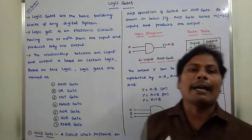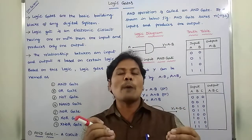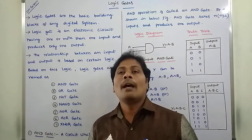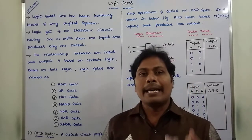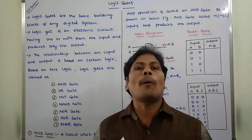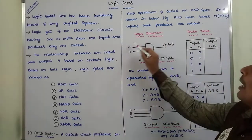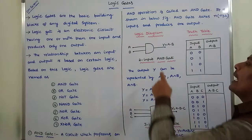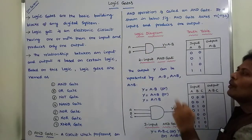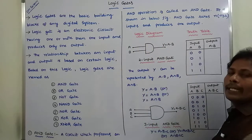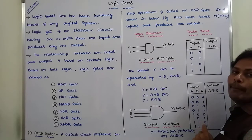The first one is the AND gate. A circuit, or a logic circuit, which performs the AND operation — that is, a logical AND operation — is called an AND gate. This is the simple diagram for a two-input AND gate. This AND gate is represented by its symbol. It can take two inputs, A and B, and it produces one output represented by capital Y.